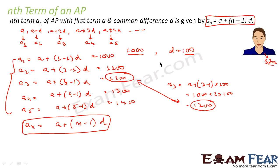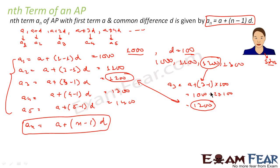If you see the series — 1000, 1100, 1200, 1300 — after three years her salary is 1200, and using my formula we also get 1200. So we can see that the formula is correct.